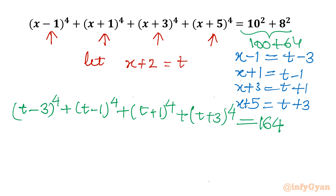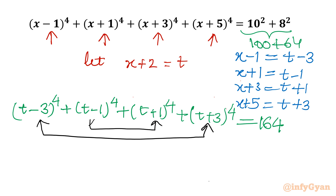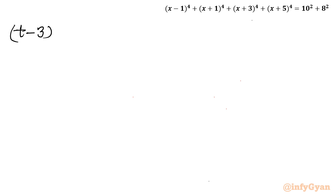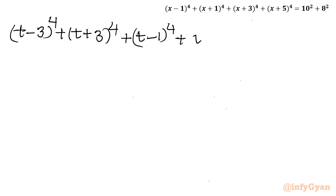Now I will club two brackets together. I will pair the first and fourth terms: (t−3)⁴ + (t+3)⁴, and then consider the second and third bracket together: (t−1)⁴ + (t+1)⁴, for our binomial expansion. The sum of all four equals 164.